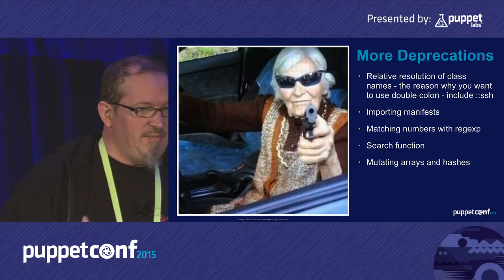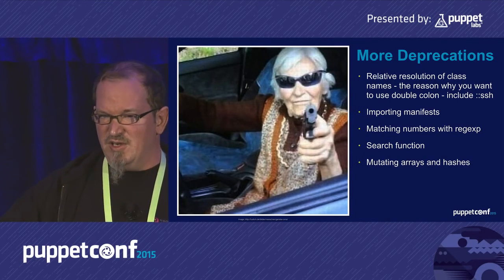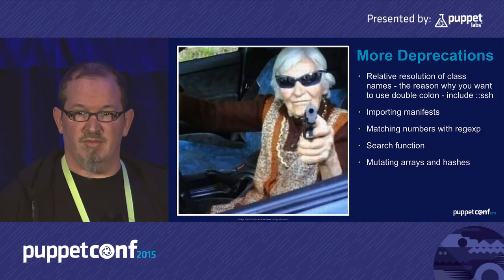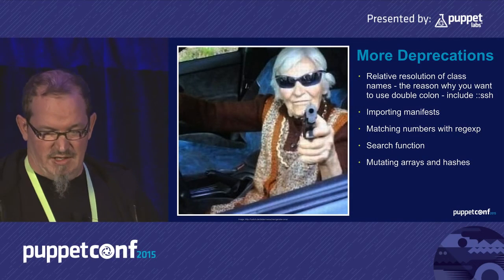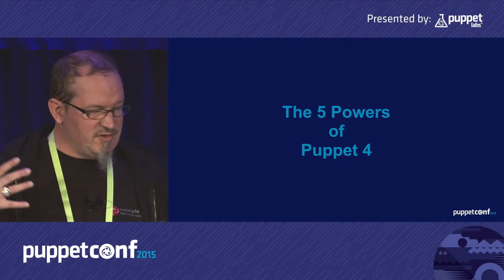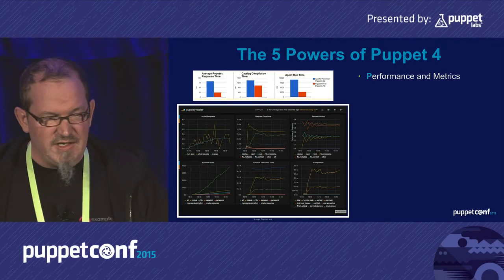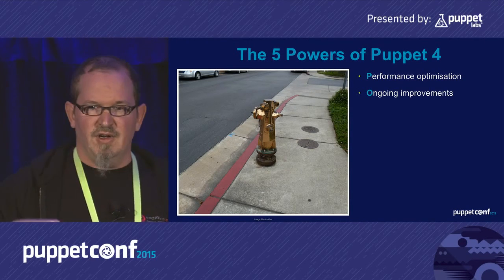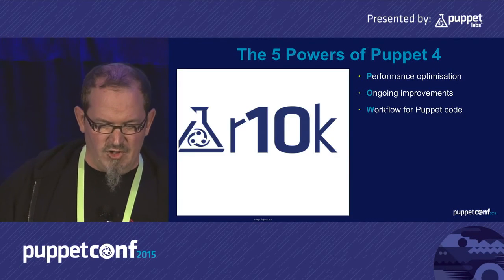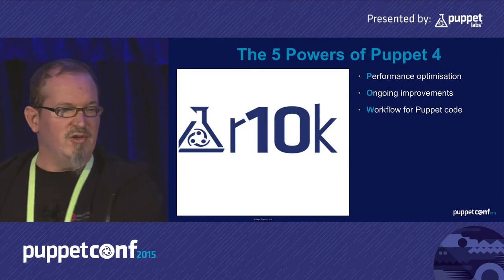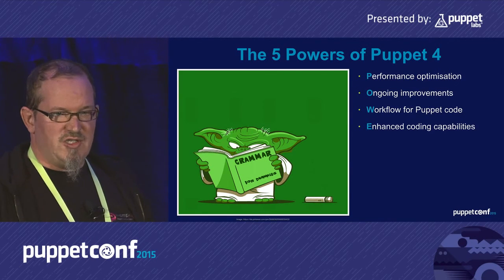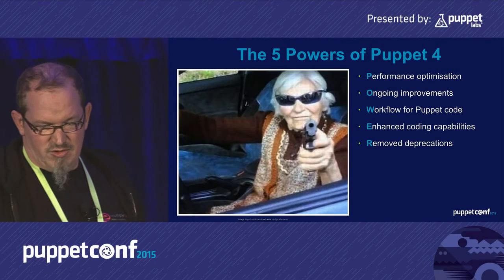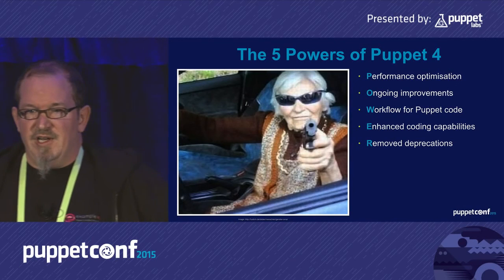Due to the type system we no longer have the possibility of matching different data types that don't go together. You can add an integer and a float and Puppet will internally produce a float result — not a big problem. But dealing with an integer and a bool value will now result in an error. So the five powers of Puppet 4: performance and metrics; permanent improvements (faster software, faster data gathering, modern style); the r10k workflow rolling out to multiple systems in parallel; enhanced coding capabilities — the type system, new functionality, everything in one file; and of course, removed deprecations.